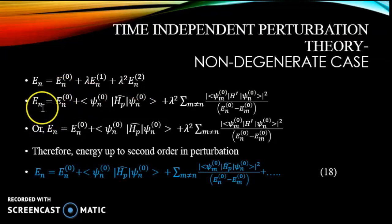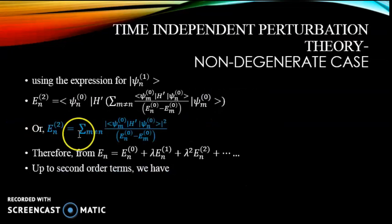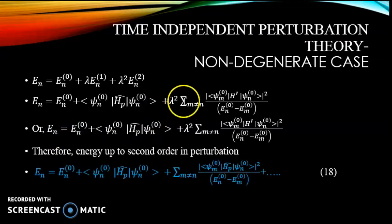Again, E_n equal to E_n^(0) plus λE_n^(1) for that one we have in between the perturbation Hamiltonian plus λ² and we have expression for E_n^(2) coming from the previous slide. And this is the equation which we are using here in place of E_n^(2). So, E_n equal to E_n^(0) plus ⟨ψ_n^(0)|H_p|ψ_n^(0)⟩ plus λ² and this left out term.